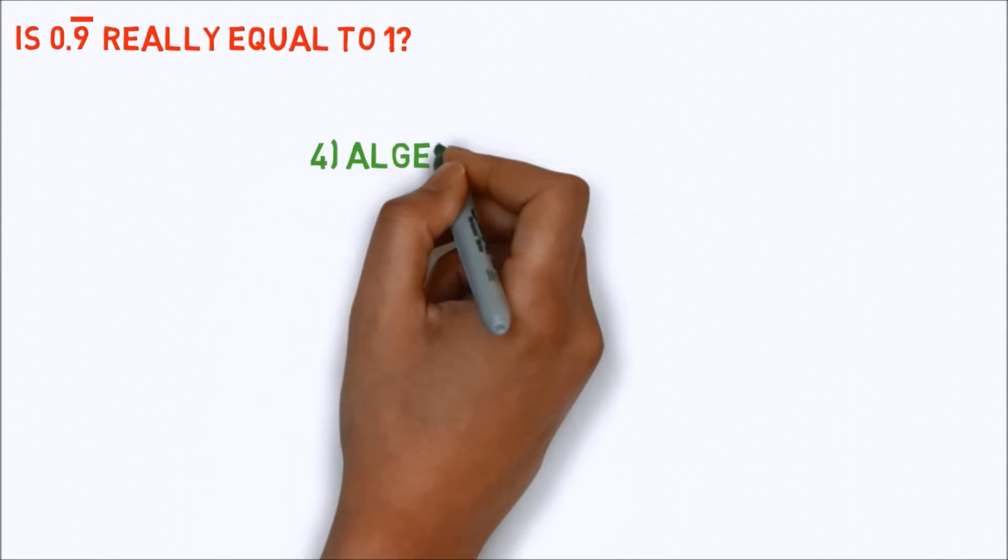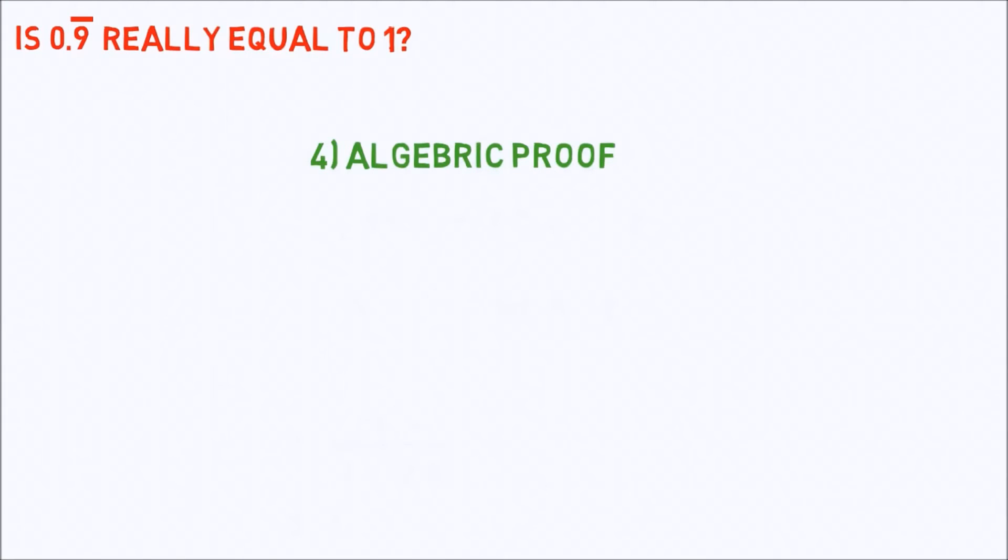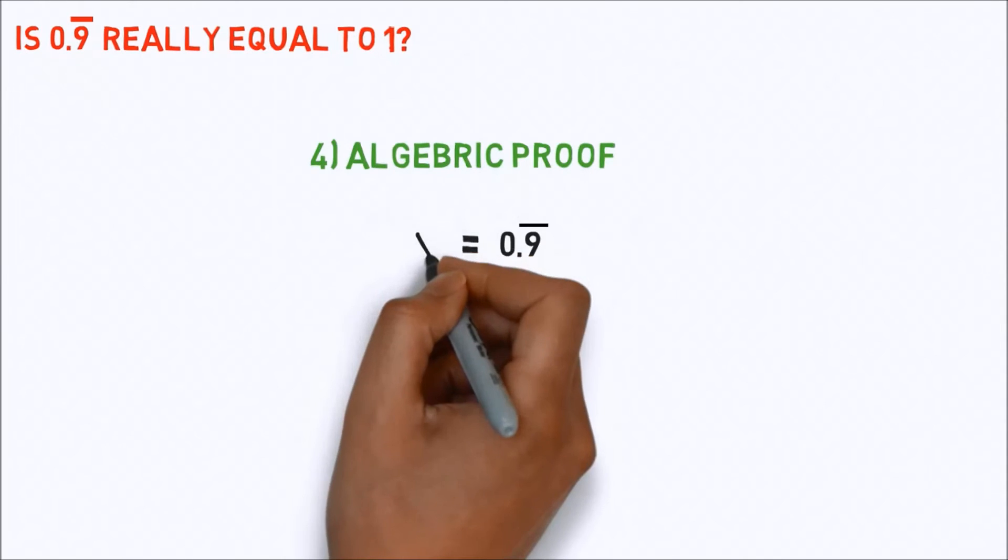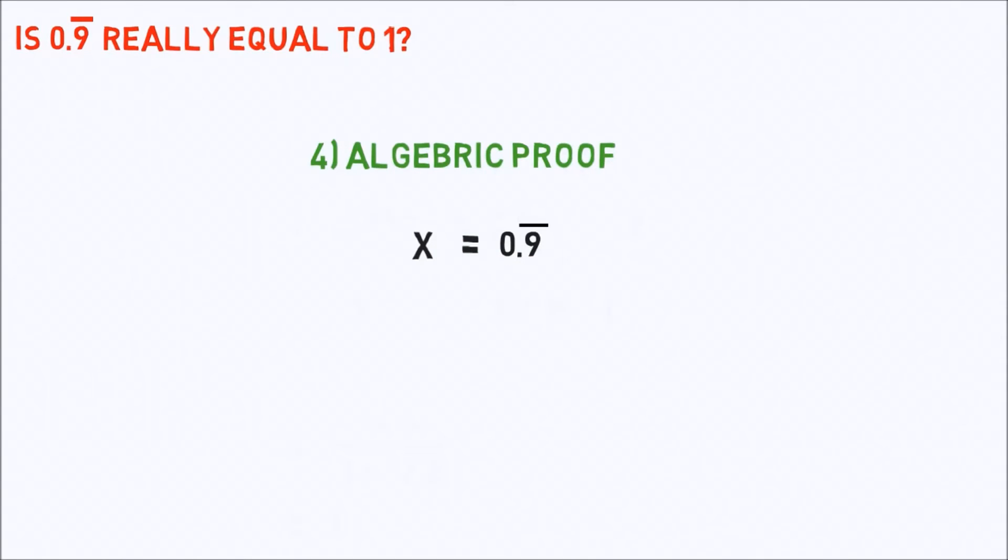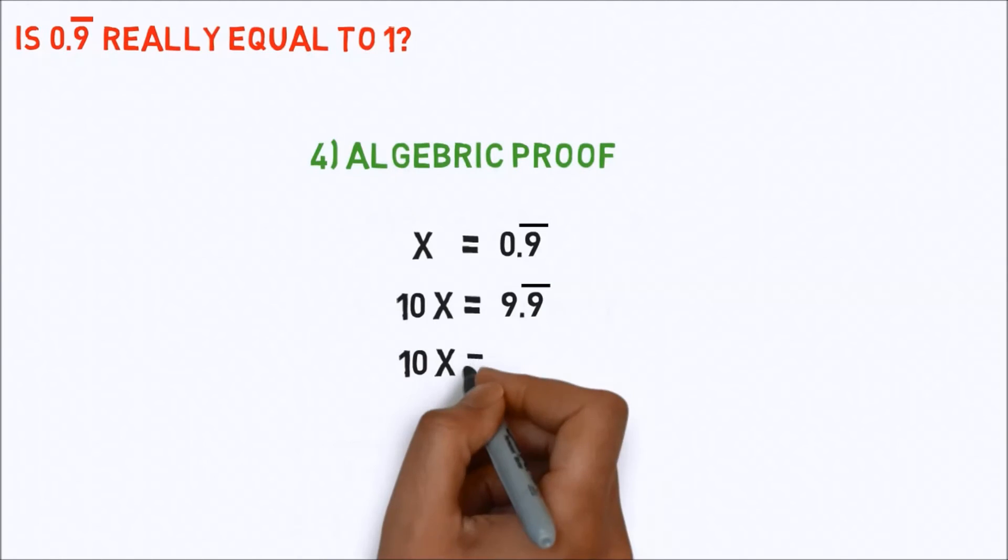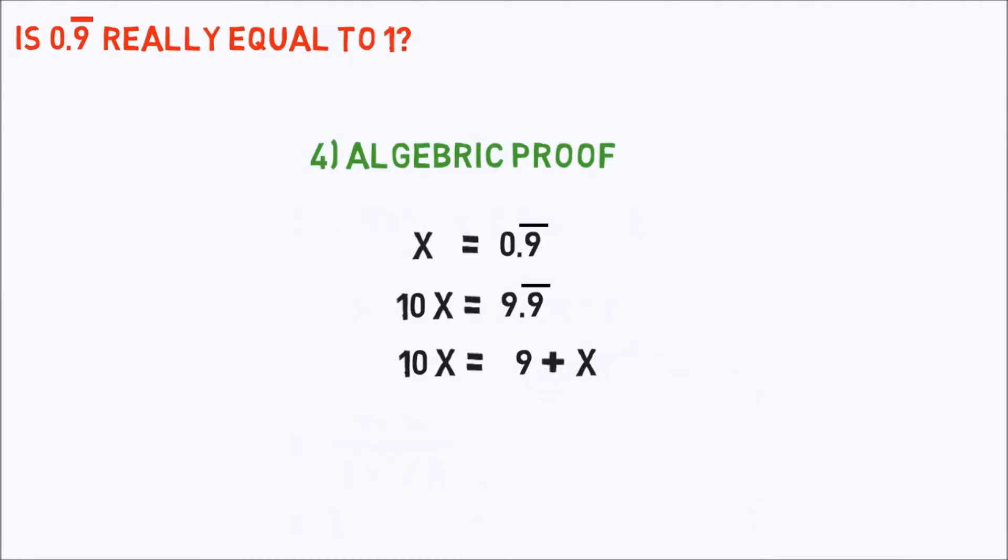Now, argument from algebra. The expression 0.9 bar is some number. It has some value, call this numerical value x. So x equals 0.9 bar. Multiply this equation by 10 on both sides, we get 10x equals 9.9 bar, which implies 10x equals 9 plus x. On solving, we get x equals 1, so 0.9 bar equals 1.